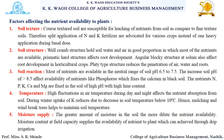Let's see the different factors affecting nutrient availability to plants. The first factor is soil texture. If there is a coarse-textured soil, those soils are susceptible to leaching of nutrients from soil as compared to fine-textured soils. Therefore, split application of nitrogen and potassium fertilizers are advocated for various crops instead of one heavy application during basal dose.